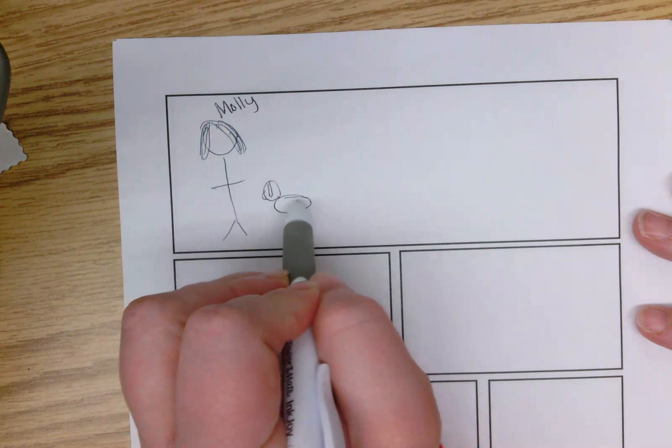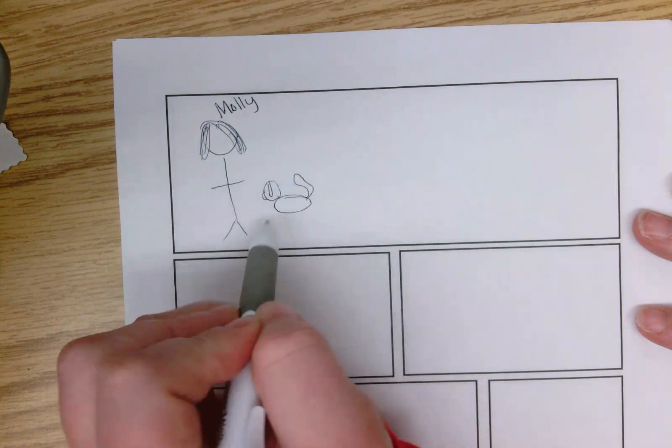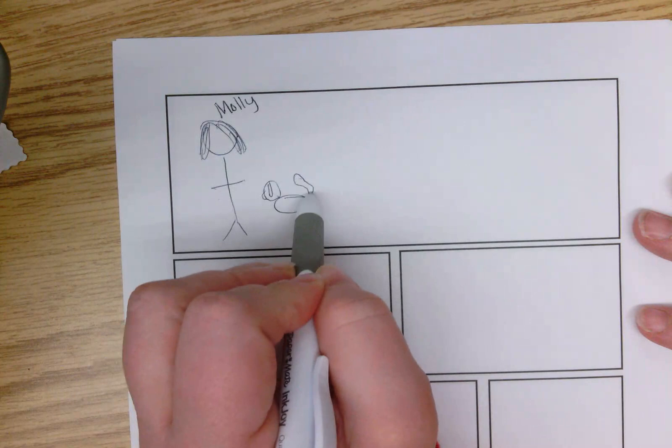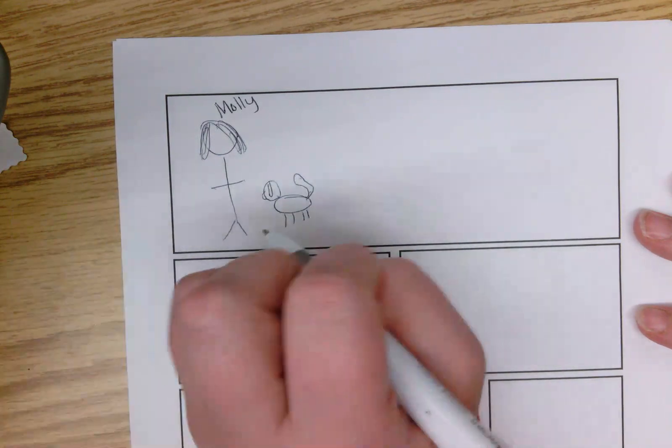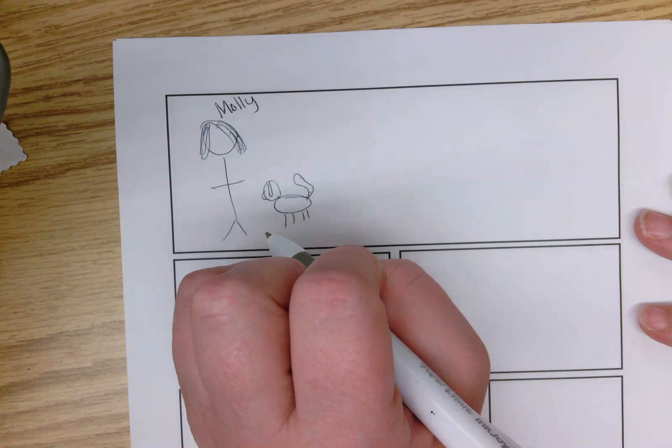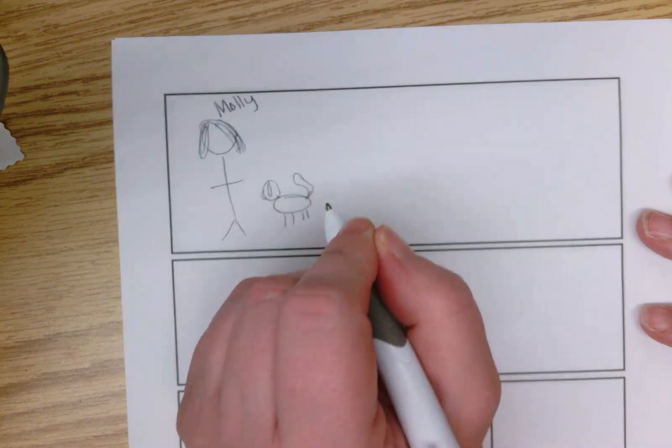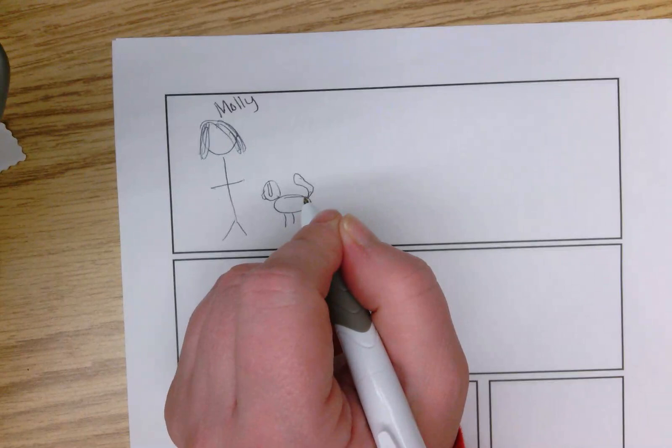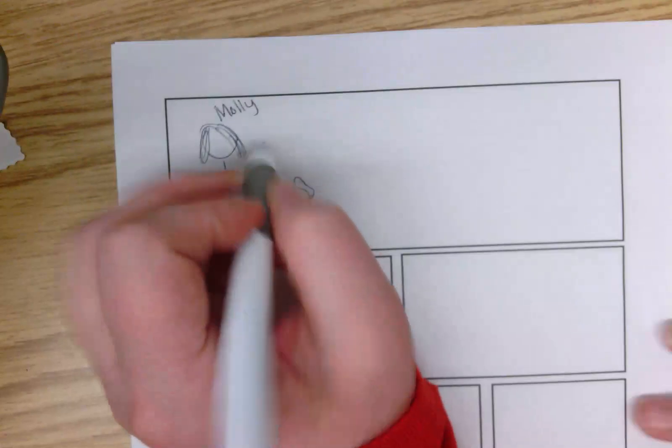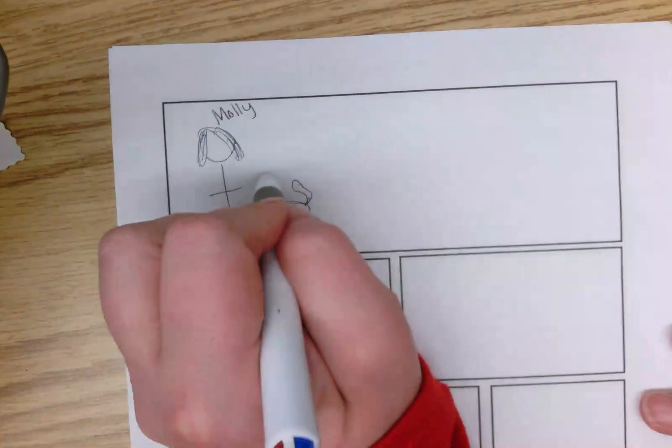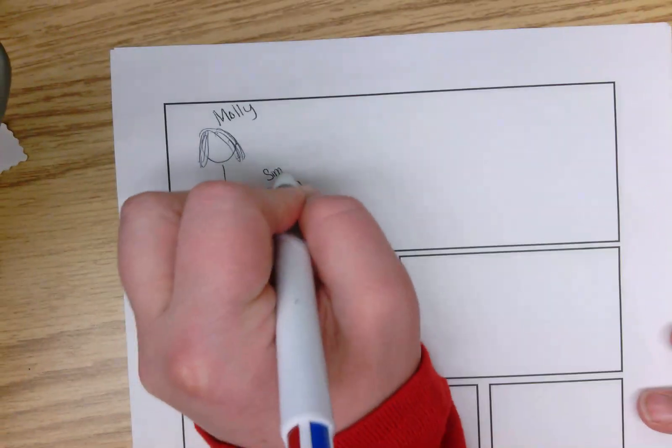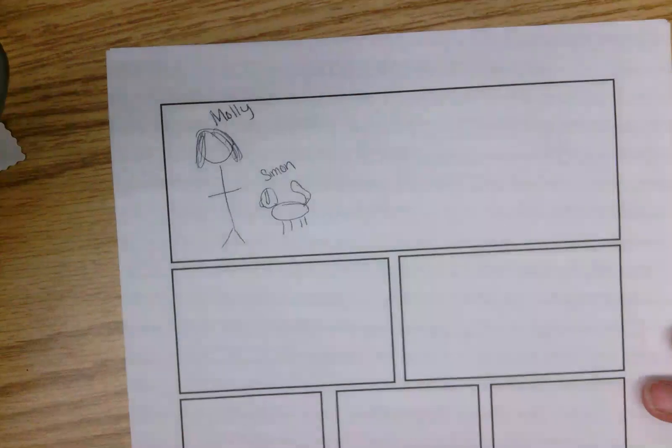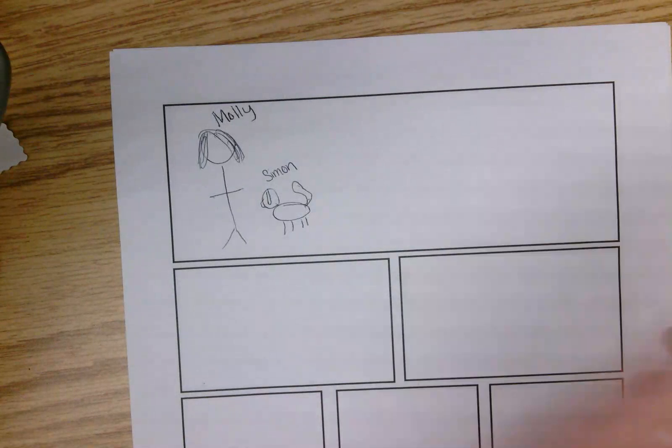Oh I did draw a dog. Oh that's what my name is guys. Okay, so this is Molly, this is Molly's dog Simon. I don't have a dog. You don't need to have a dog, maybe you could put like a basketball with yours.